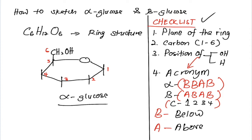The next step is we will sketch the hydroxyl group and hydrogen atom. To sketch the hydroxyl group and hydrogen atoms, we will use the acronym for alpha glucose. The acronym is BBAB. B stands for below plane of the ring, and A stands for above plane of the ring.